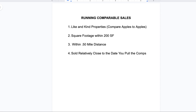The first thing you want to look for when running comparable sales is comparing apples to apples — you want like and kind properties. So for example, if a property is a single family, three bedroom, two bath ranch at 1,200 square feet, then you want to find a single family, three bedroom, two bath ranch at around 1,200 square feet as well. If it's a brick house, try to search for a brick house. If you can't find one, you can go with other property types, but just be mindful that you're comparing apples to apples.